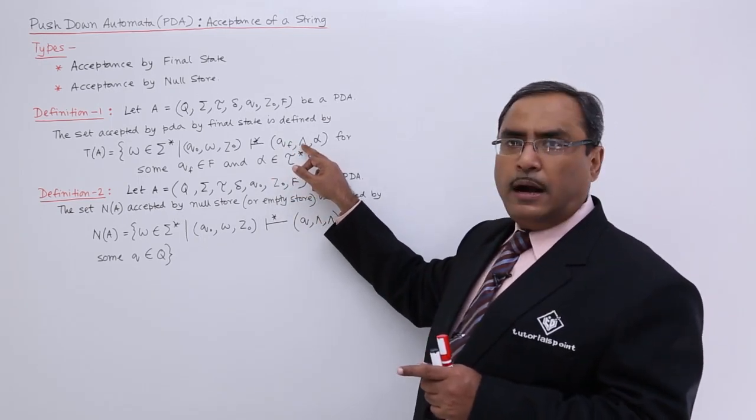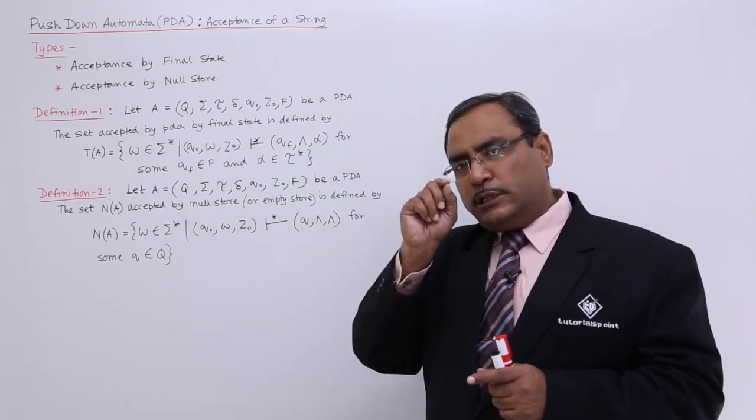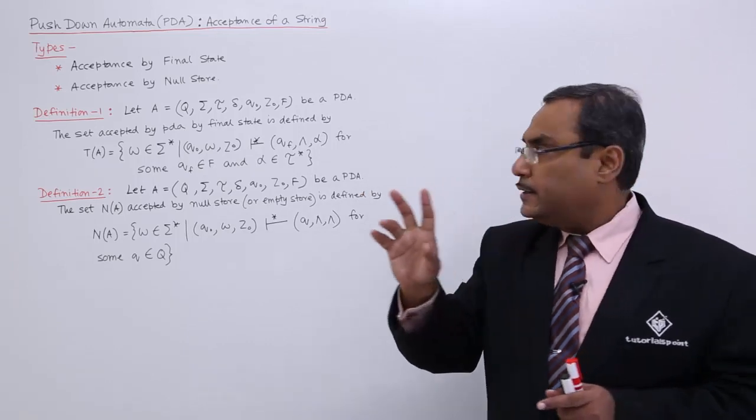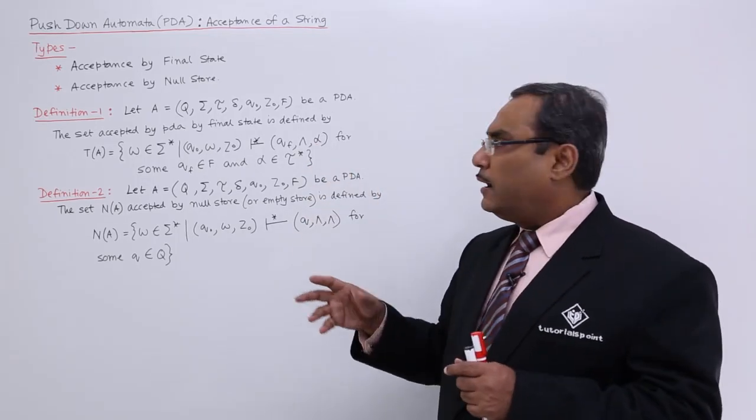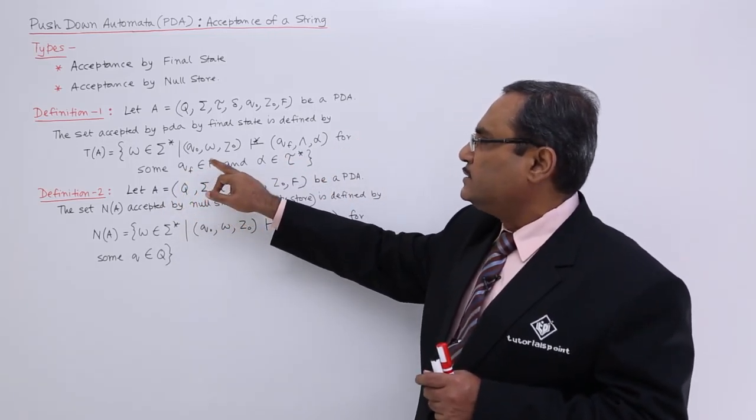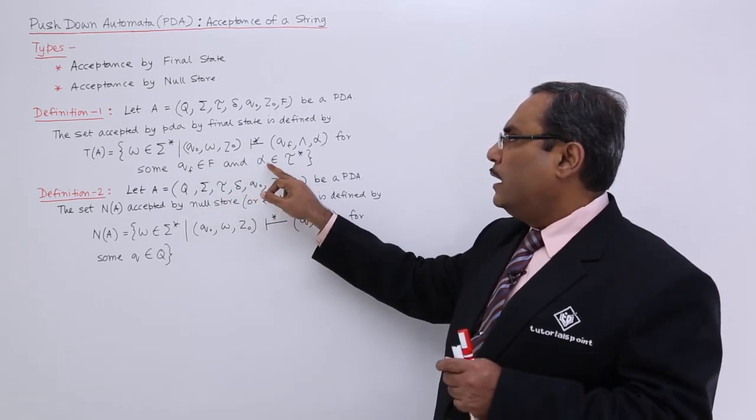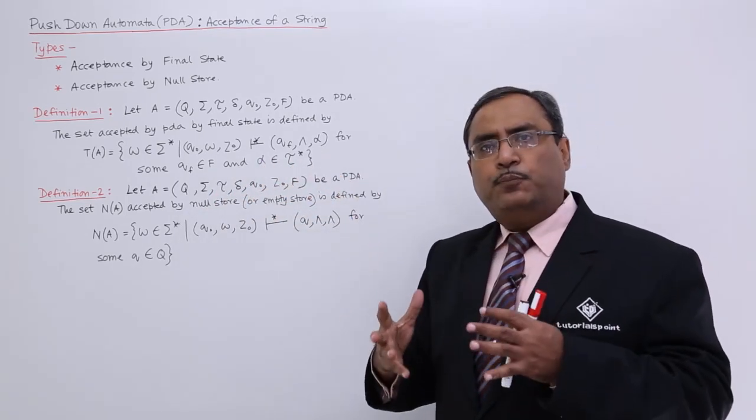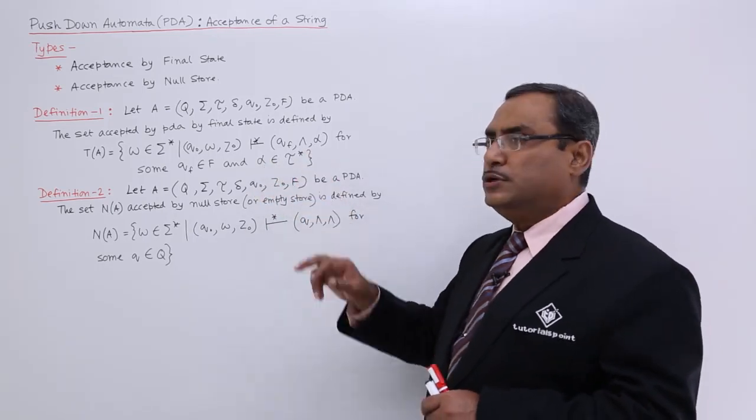Kappa means the input string has got exhausted - all the symbols in the input string will be read. The stack may be containing alpha for some QF which belongs to the set of final states. What is alpha? Alpha is a collection of pushdown store symbols.